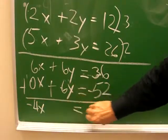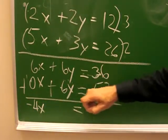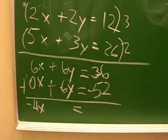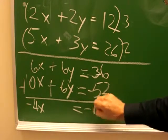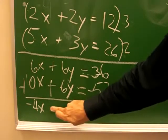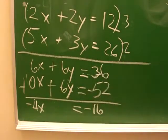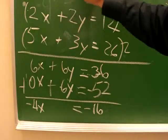This goes away and we have 36 minus 52 for a negative 16. 4 times negative 4 gives you negative 16. So x equals 4.